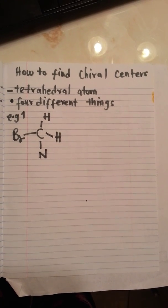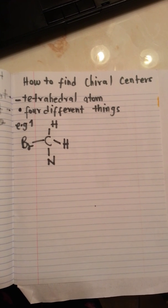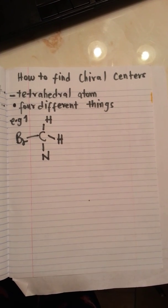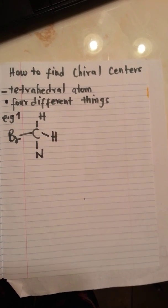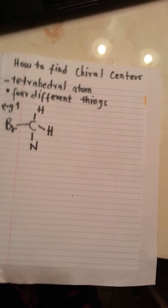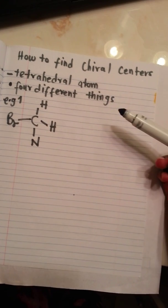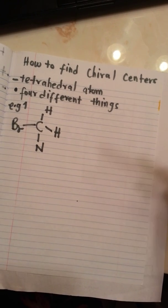Hi there, I hope you're doing good today. Today we are going to talk about how to find chiral centers. So for an atom to be a chiral center, it must be tetrahedral and thus it must be bonded to four different things.